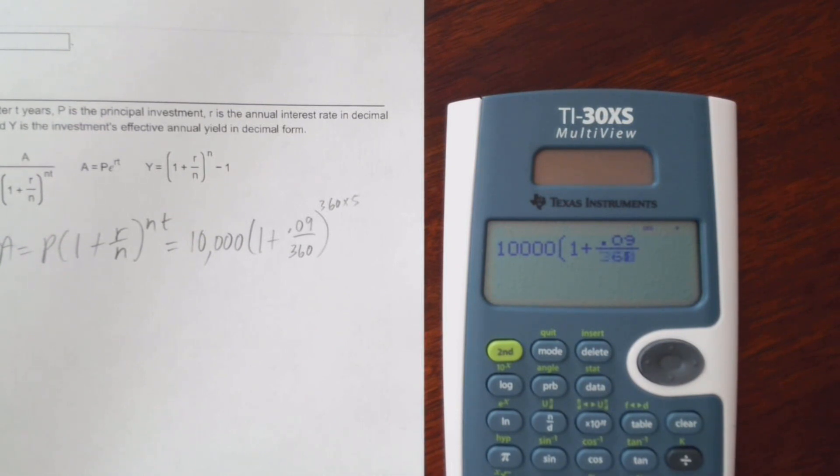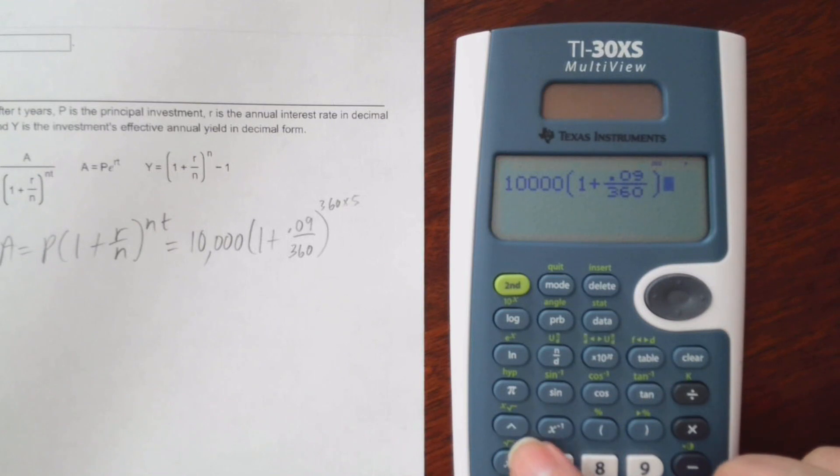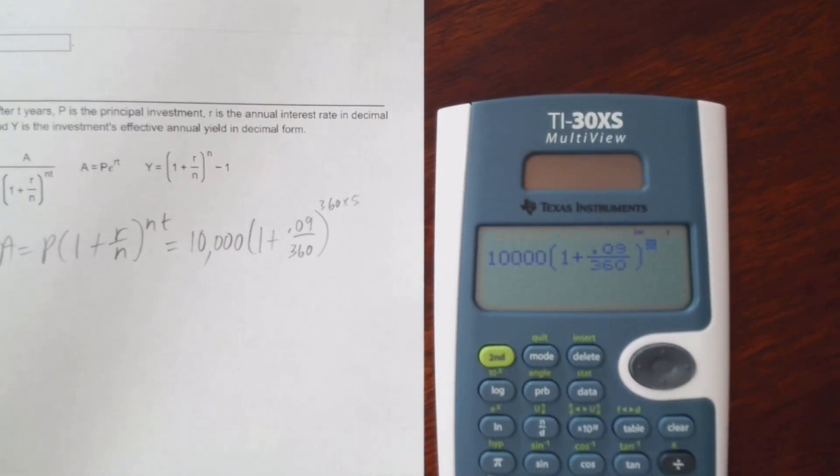Over 360. Let's arrow out of there and put our parentheses. And then don't forget you want to hit the exponent button here. And we'll put in 360 times 5.